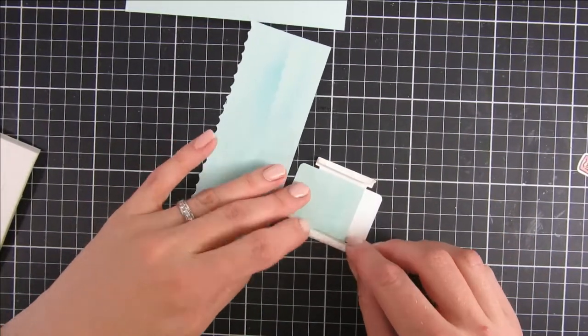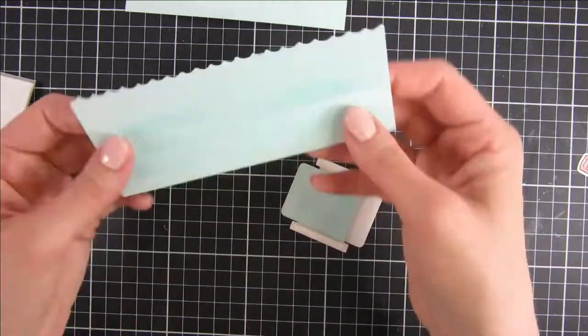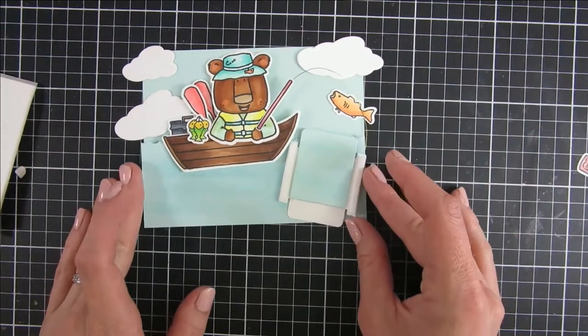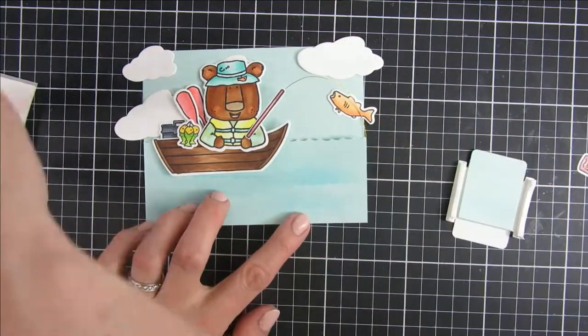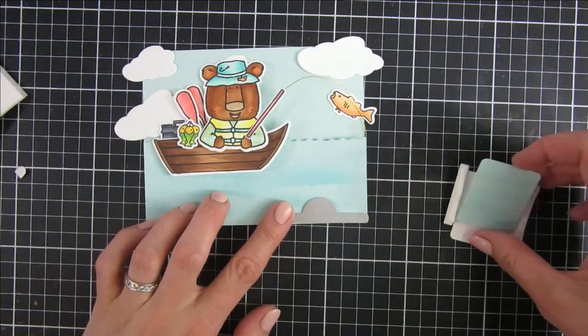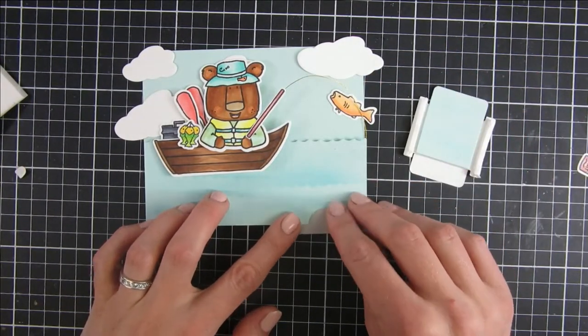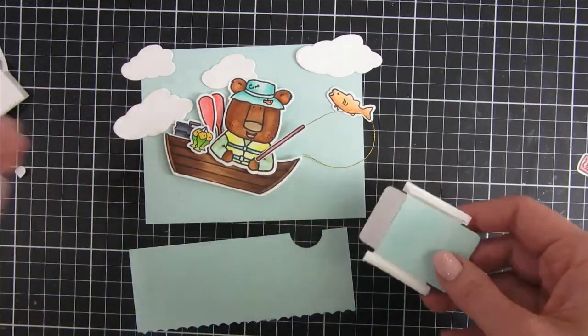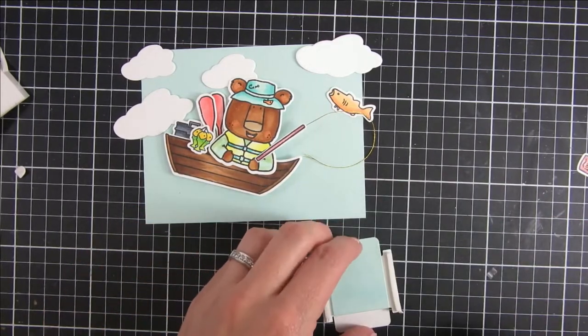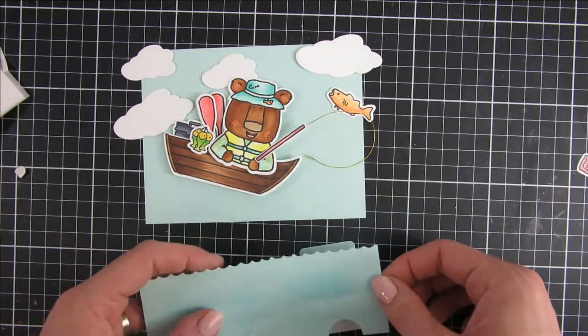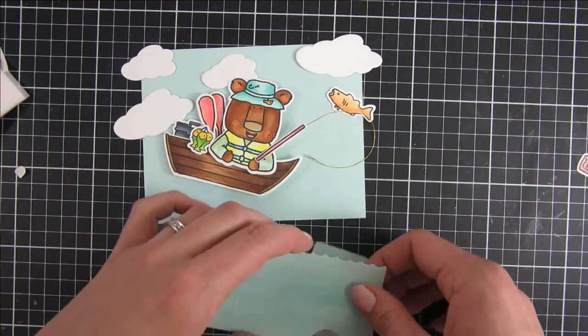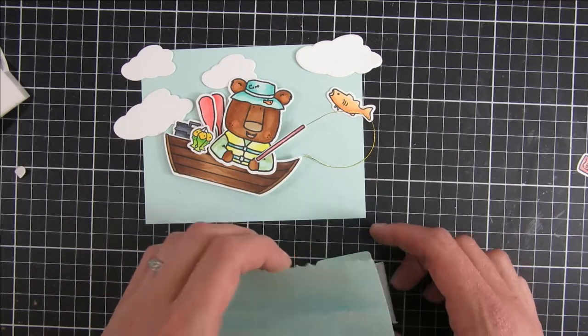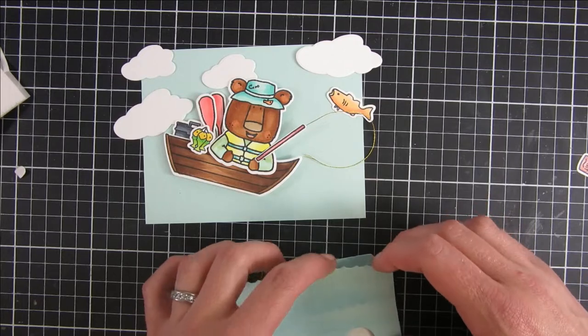We are going to use some double-sided foam strips. These are also from Heffy Doodle and they are perfect for their interactive elements. Making sure that I have everything placed out so it can move freely, I will now take the die that comes in this set and make a little slit so that the recipient knows where to grab this panel. Then I will adhere this mechanism on top of it. You can see that it will slightly stick up when I'm having it here, but that is okay.